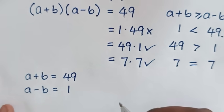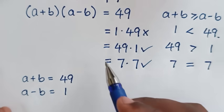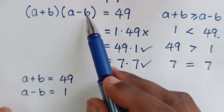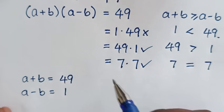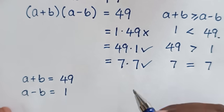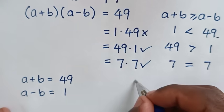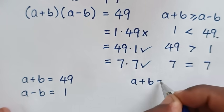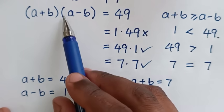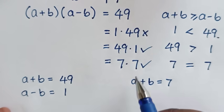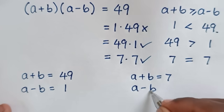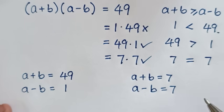For the other solution, a plus b times a minus b equals 7 times 7. So a plus b is equal to 7, and a minus b is equal to 7.